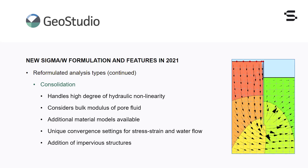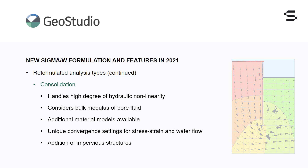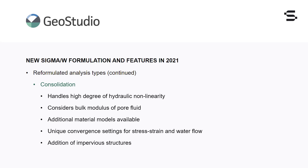The ability to simulate an impervious structure has been added to Sigma W, making it easy to model structures that impede the flow of water, such as sheet-pile walls. This new feature removes the need to use interface elements with low conductivity and/or null elements adjacent to geotechnical structures.